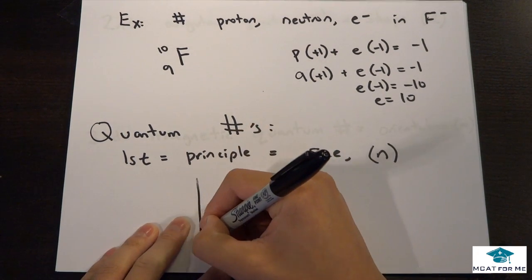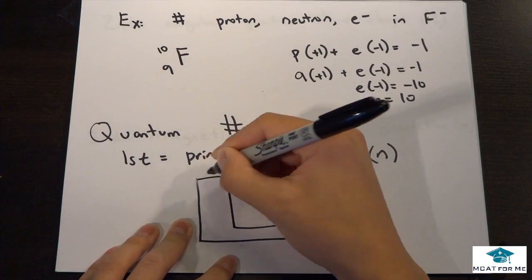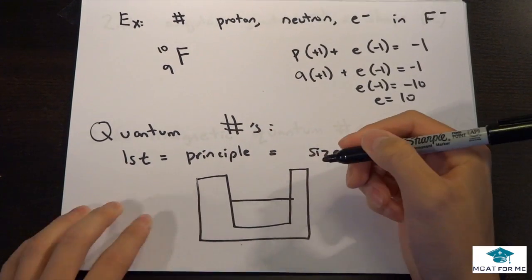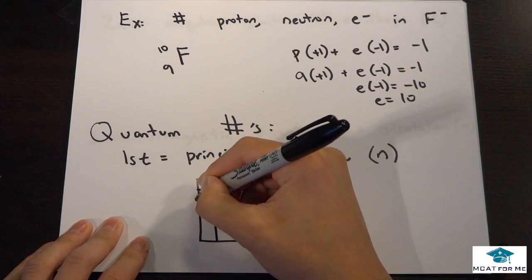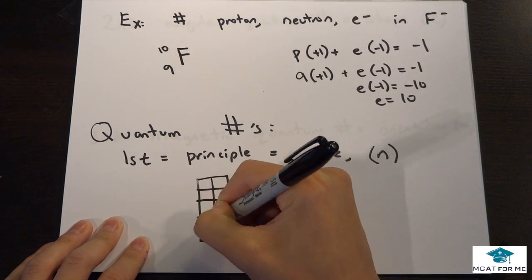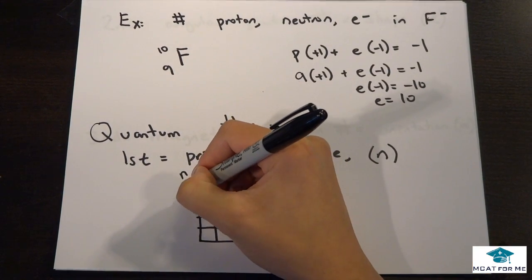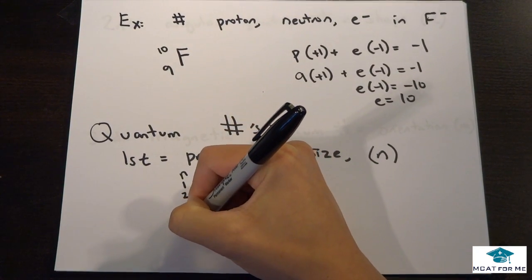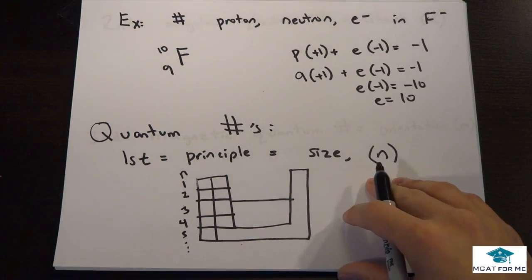So if we imagine this as our periodic table, so there's also this in the middle right there. So let's just say this is our periodic table. This n, if we had n right here, this would be 1, 2, 3, 4, 5, and on and on. So just every period will be a different n value.